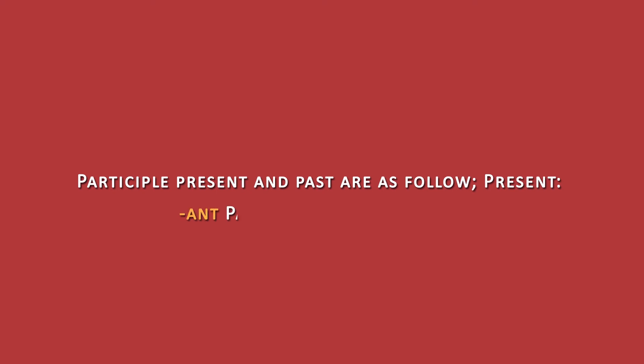With that out of the way, the participle present and past tense for the first group are as follows. For the present participle you would have the ending -ant. For the past participle, the endings are: at and ats for the plural, and ada and adas for the feminine singular and plural forms respectively.